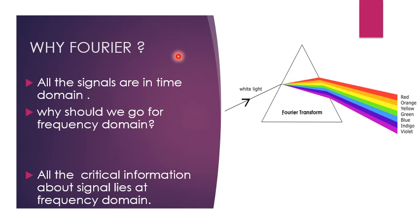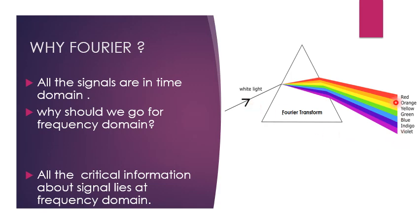In discrete time signal processing, we heavily use the Fourier transform. Why Fourier? All signals are in the time domain, but all critical information about a signal lies in the frequency domain. A prism represents the Fourier transform — just as sunlight passed through a prism reveals all its component frequencies (like UV rays and visible light), the Fourier transform reveals the frequency components of a signal.